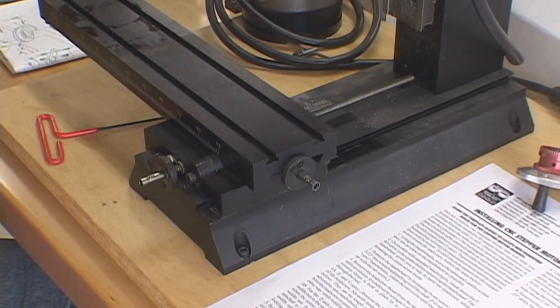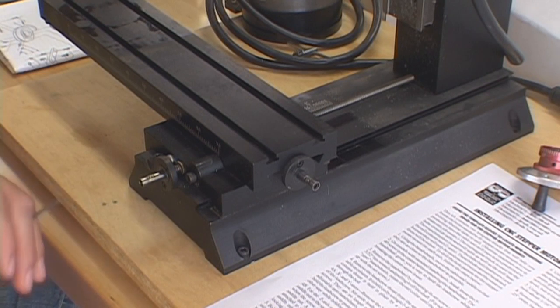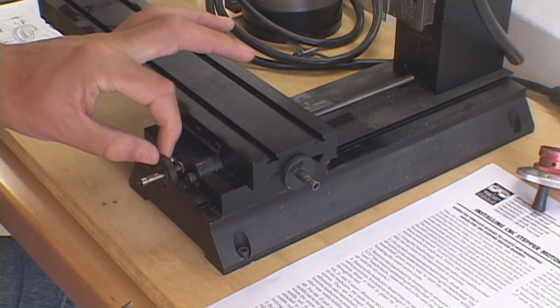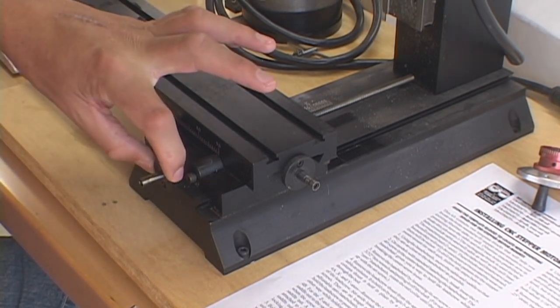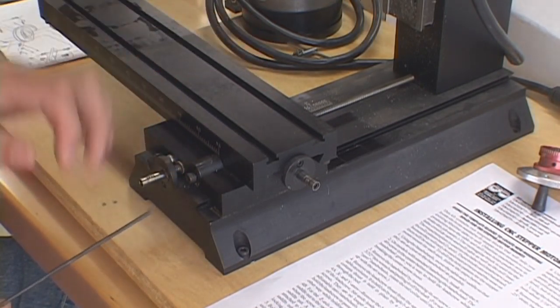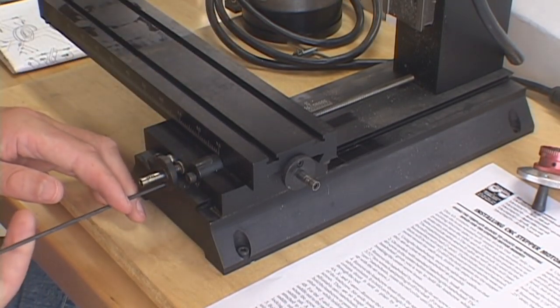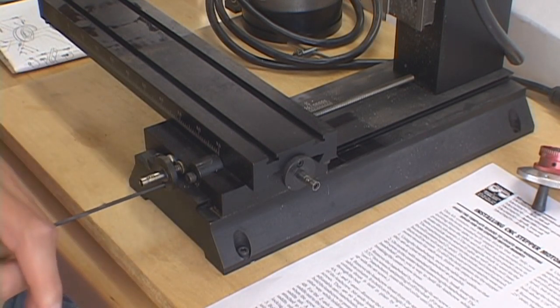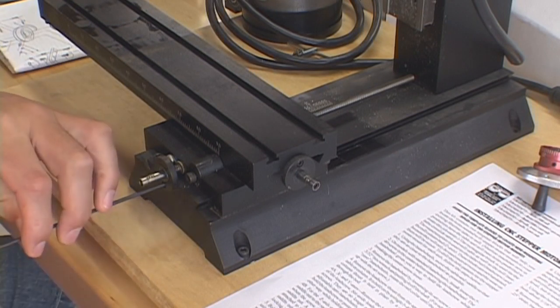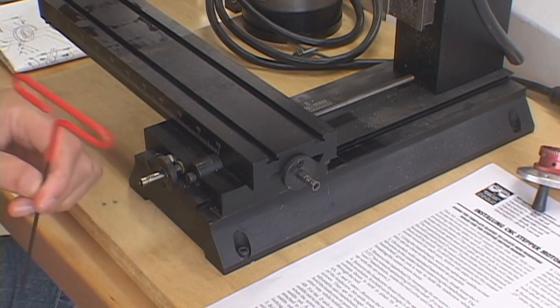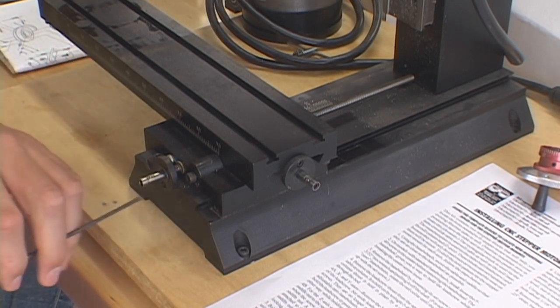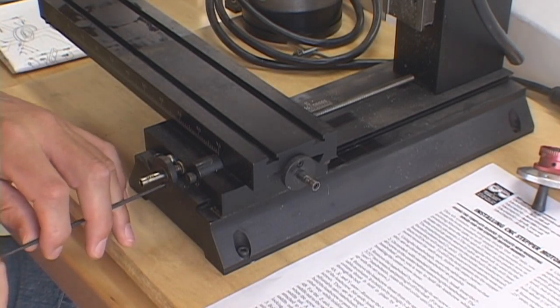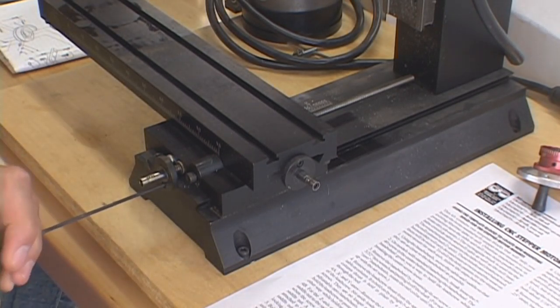Okay and step number four it says remove the lead screws thrust from the appropriate base table to column. Just some quick research on the web and I believe that's what this little thing is. Seems a logical next step. This looks like a big fat washer. Same size three thirty-seconds allen screw holding it in. These little puppies are kind of tight on all the hand wheels so you really have to have a good wrench.